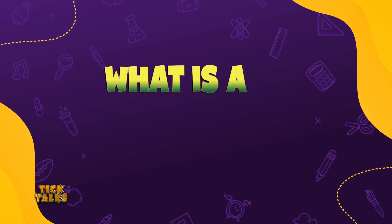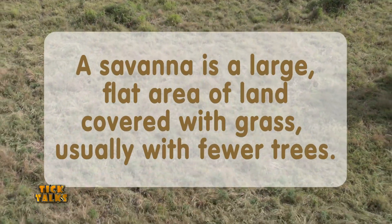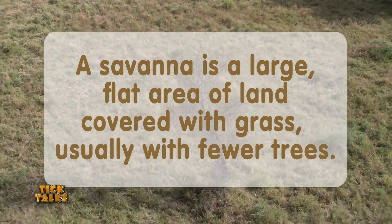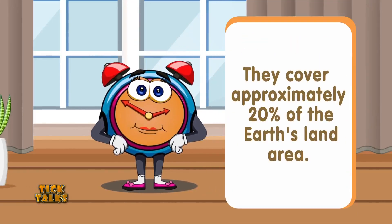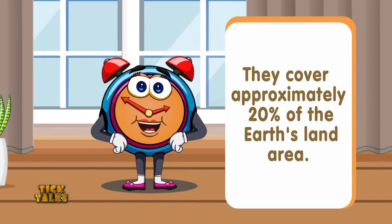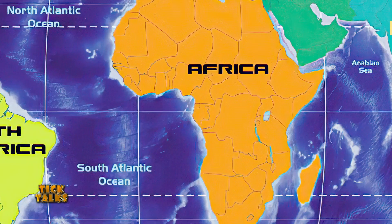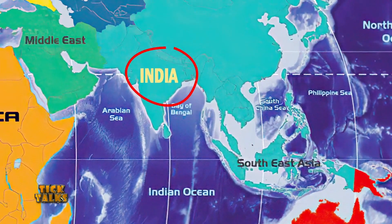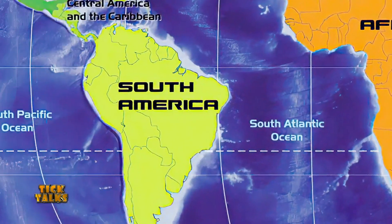So, what is a savannah? A savannah is a large flat area of land covered with grass, usually with fewer trees. They cover approximately 20% of the earth's land area. The most famous stretches of savannah are in Africa, but they also occur in Australia, India, South East Asia, and South America.